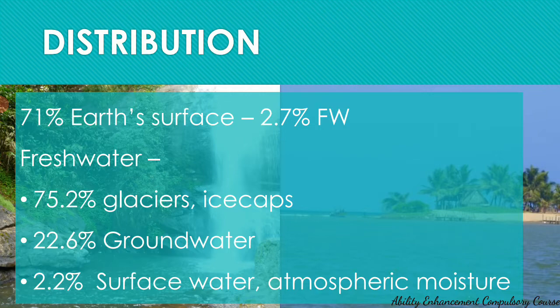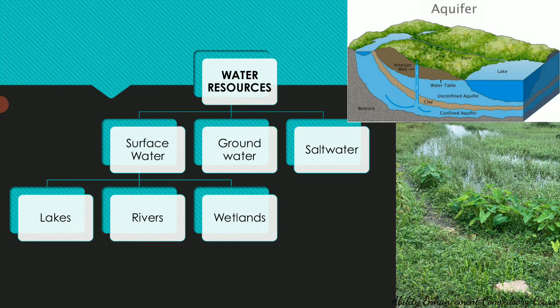Now let's see the types of water resources. Water resources can be broadly divided into surface water resources and groundwater resources under fresh water, and apart from this we also have salt water resources. Surface water is water found on the surface of the land, replenished by precipitation, and lost by evaporation. It comes back in the form of rainfall or snowfall and is ultimately discharged to the oceans.